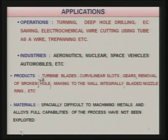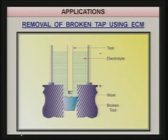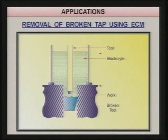It is felt that the full capabilities of the process have not been exploited. One main reason is concern that it is not very environmentally friendly — disposal of sludge is a problem. A specific application shown is removal of a broken tool from a hole: an ECM electrode is inserted, the broken tool is made the anode and the ECM tool the cathode, electrolyte is supplied, a hole is drilled inside the broken tool, and it is then removed by rotation.